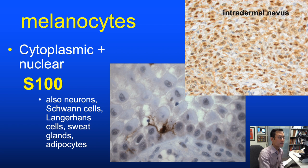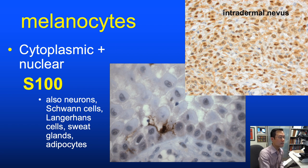Stains for melanocytes are among the most frequently ordered. S100 protein is named for being 100% soluble in ammonium sulfate. We like to see nuclear and cytoplasmic staining in melanocytes. However, S100 is highly sensitive but unfortunately not highly specific—it also stains neural cells, epidermal Langerhans cells, and other cells.